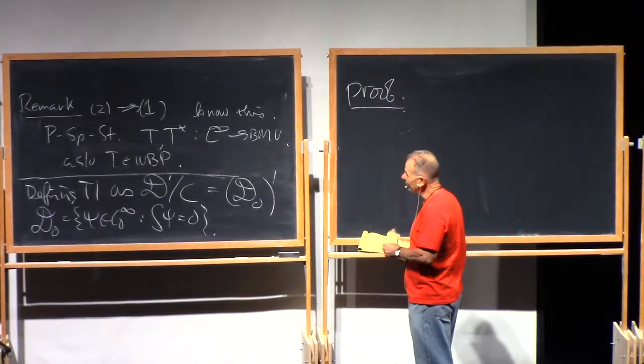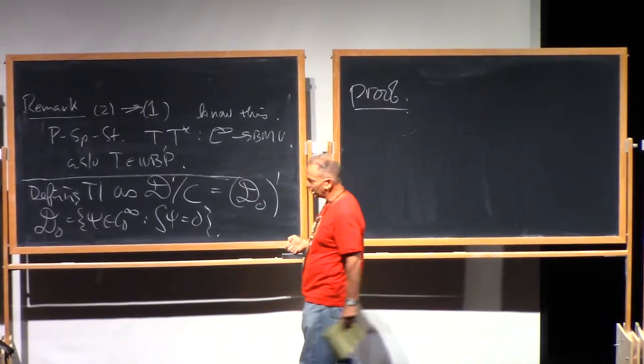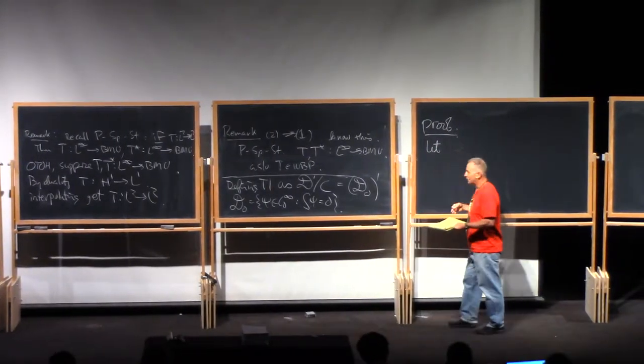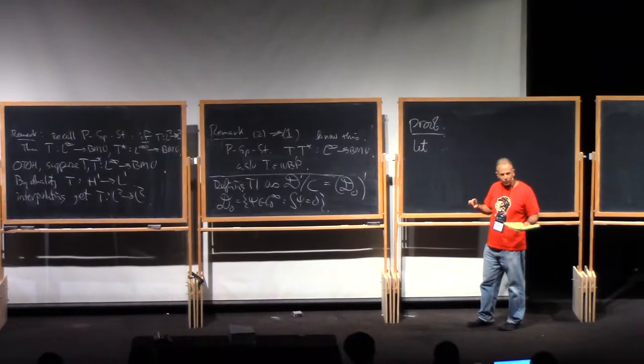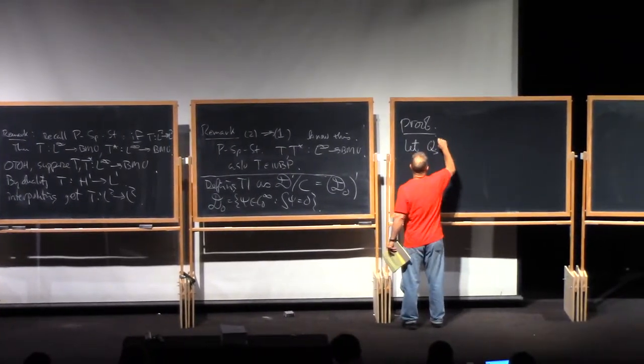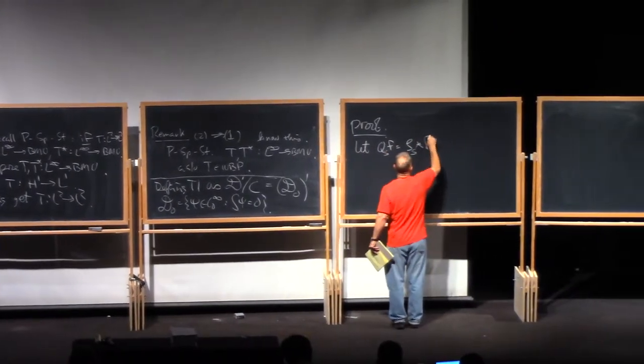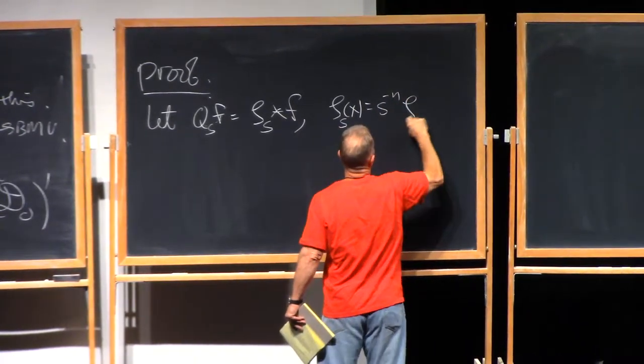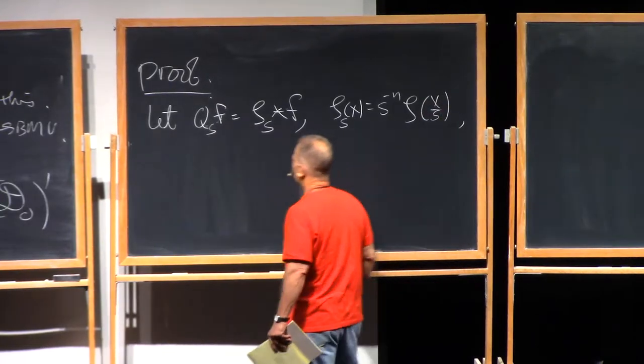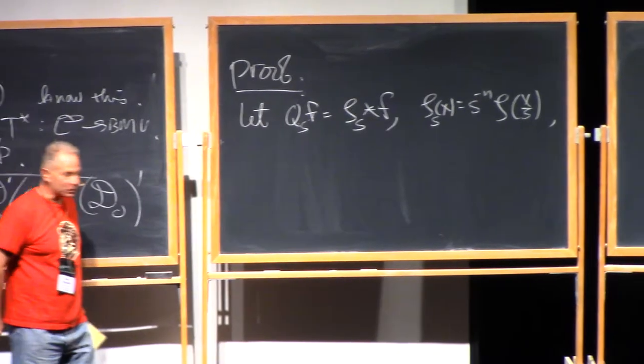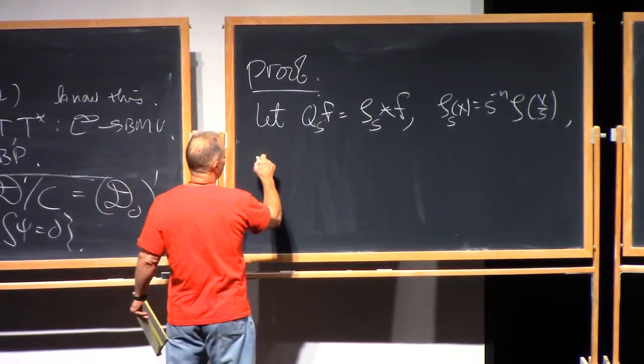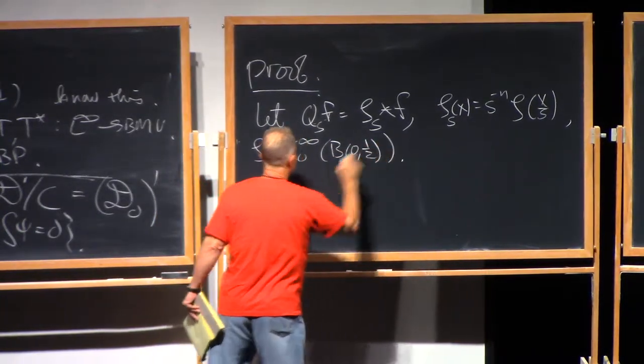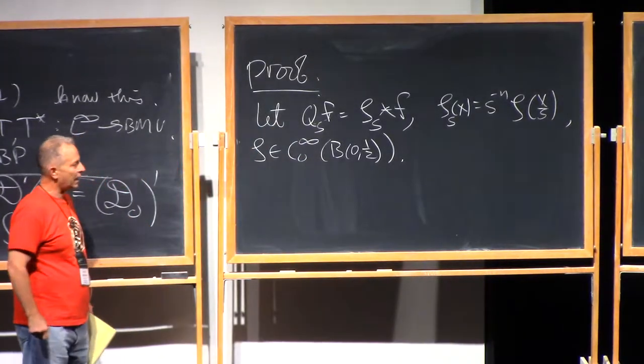So we're going to use Littlewood-Paley theory. So we're going to introduce our usual sort of nice Littlewood-Paley operators that give us a Calderón reproducing formula. So let Qsf equals zeta s star f, zeta s as usual, s to the minus n, zeta of x over s. I'm not sure why I'm using s. I'm going to be switching to t in a moment, but I hope that's not confusing. We want to have zeta in C0 infinity, just for a slight amount of convenience, I'll choose it to be supported in the ball of radius a half rather than one.